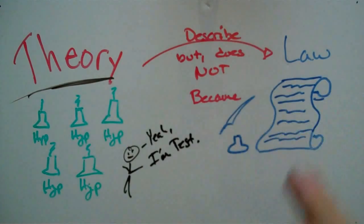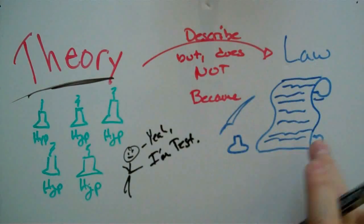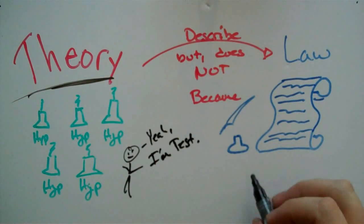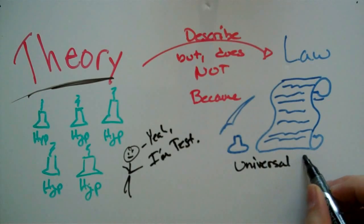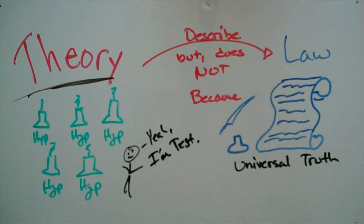But a theory never turns into a law. A theory just describes what a law is. A law is a universal truth, universally accepted. The law of gravity, the law of superposition, the law of inertia.